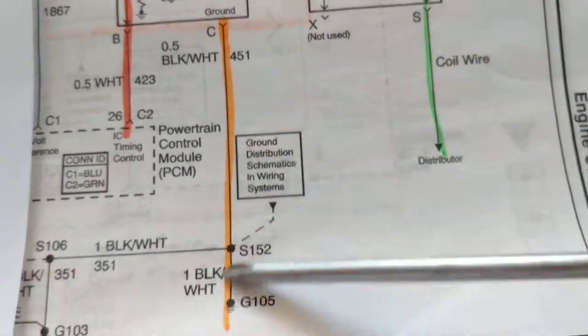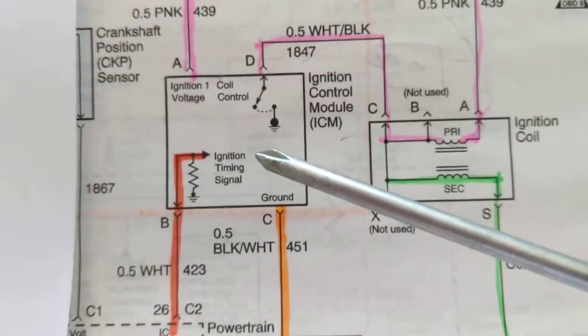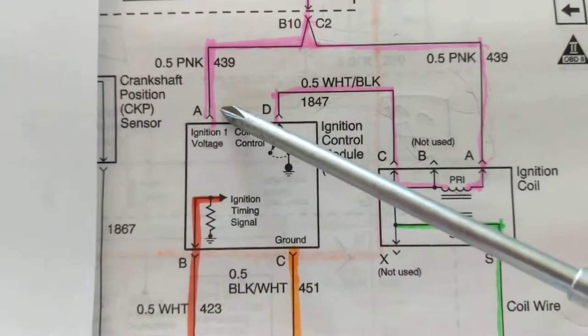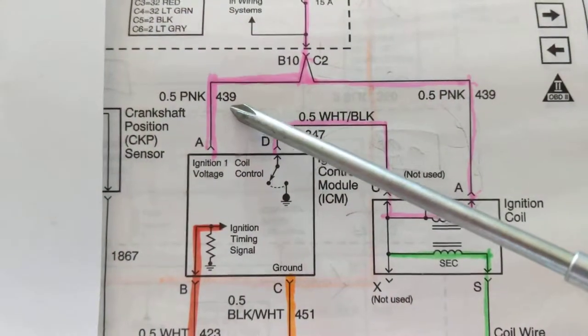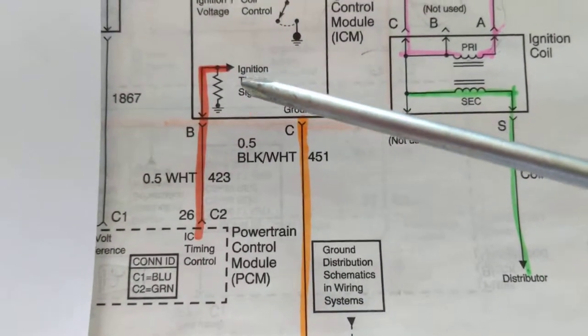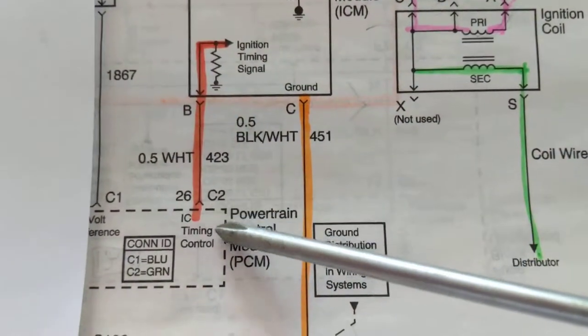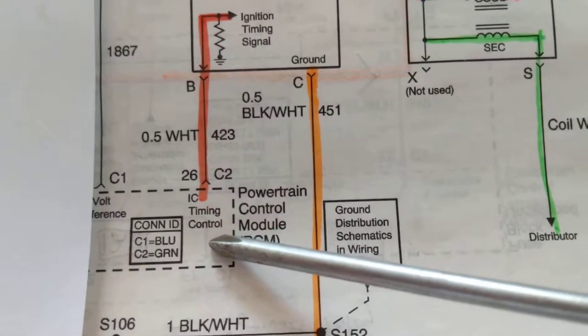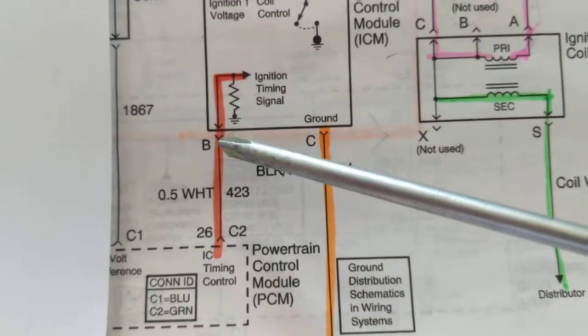Which is the secondary, will go to this distributor. See over here, this is ground. So basically A is B+ from the fuse. Ignition timing signal, this is coming from the PCM, which is the computer, pin 26 into B.